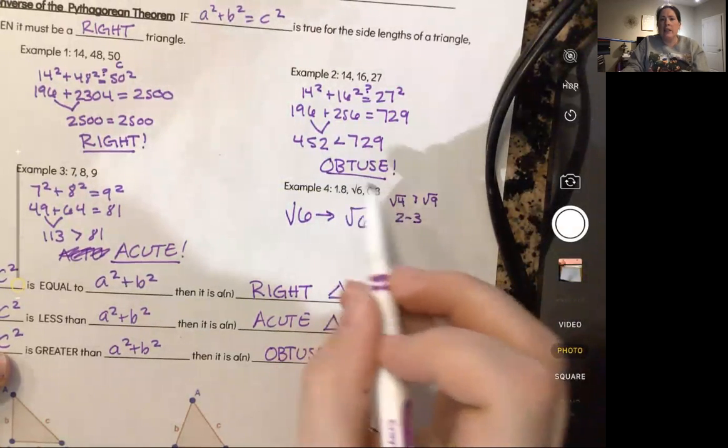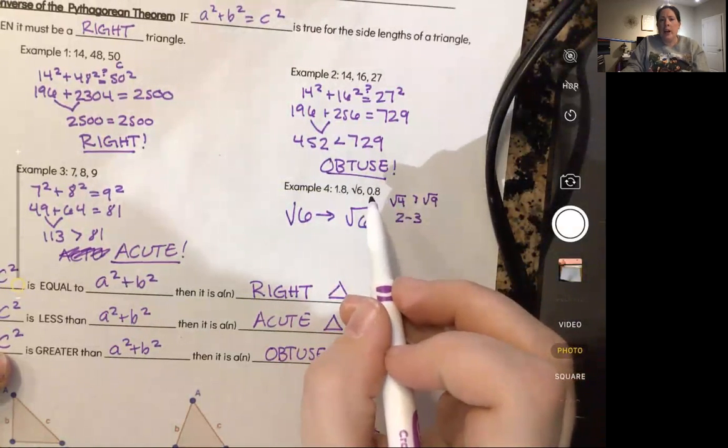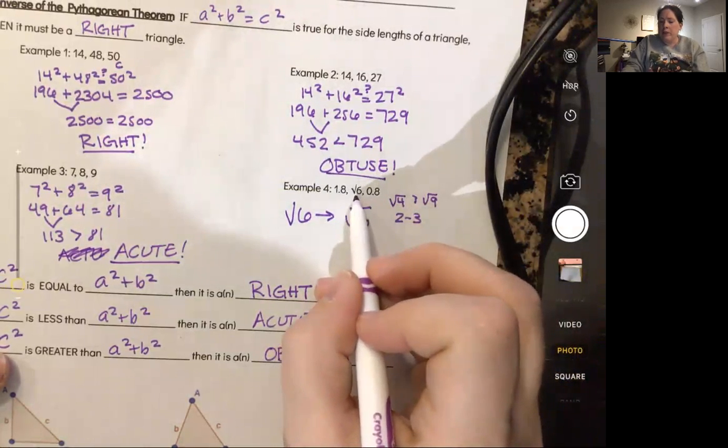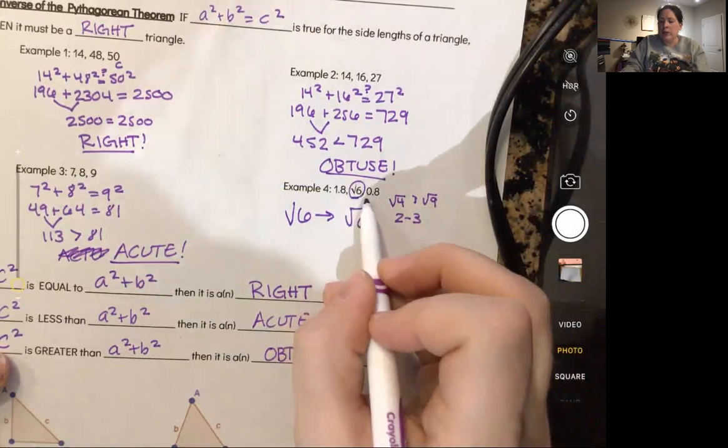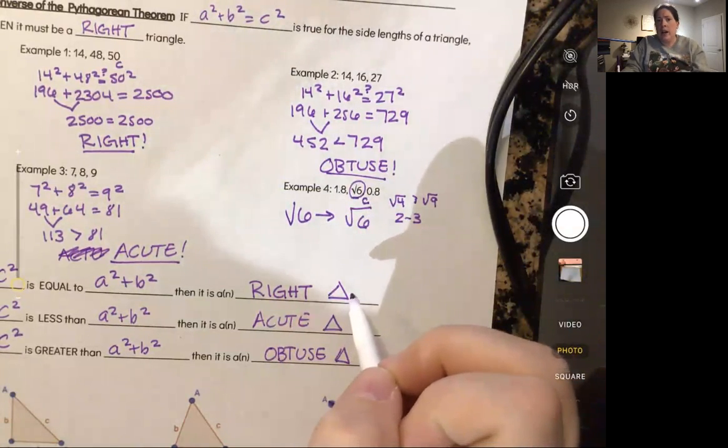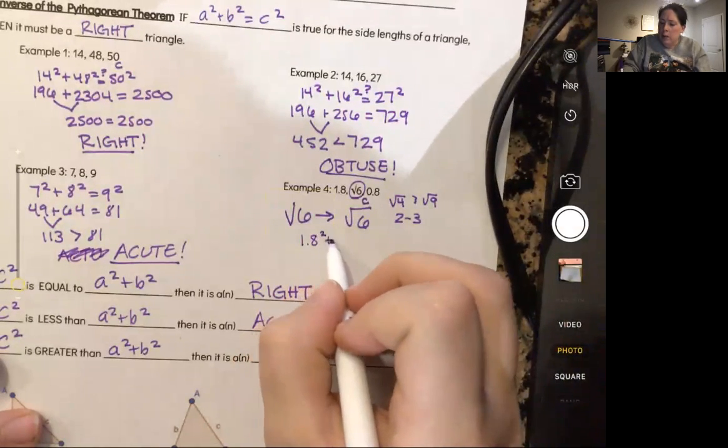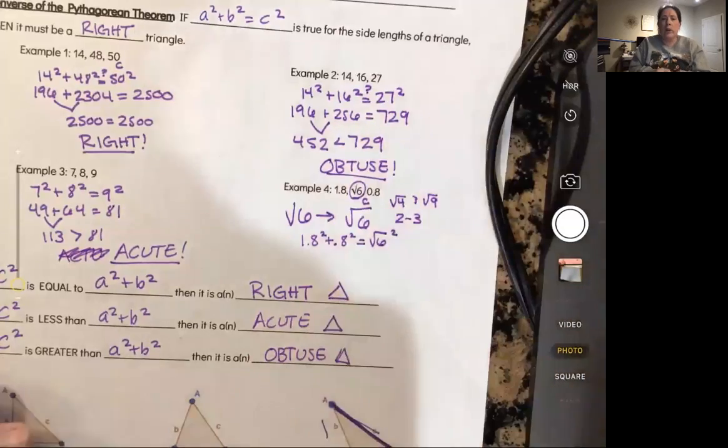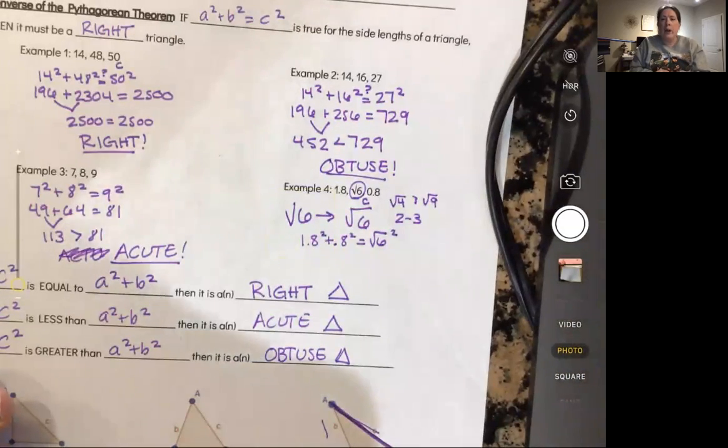When I'm looking at these numbers here, I would realize that the square root of six is actually going to be my c in this case. I would actually have to do this as 1.8 squared plus 0.8 squared is equal to the square root of six squared. I can't see that as a six, I need to see that as a square root of six and then follow up.